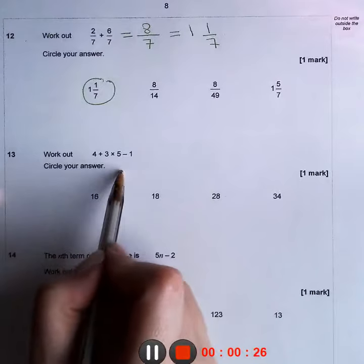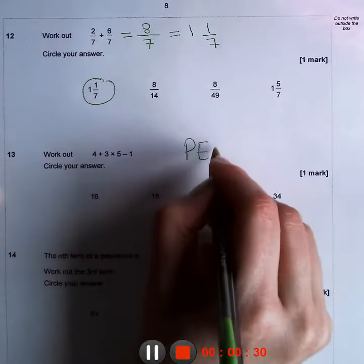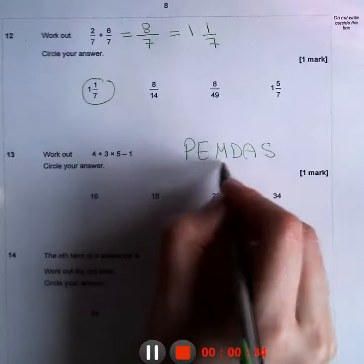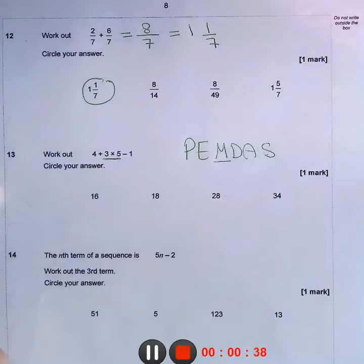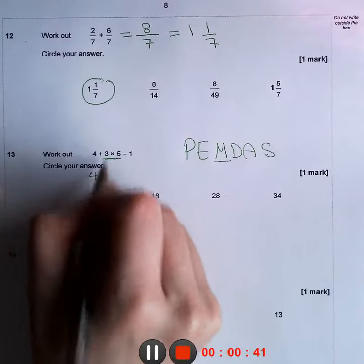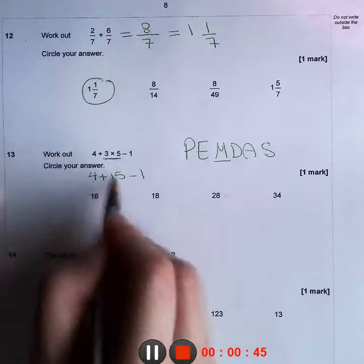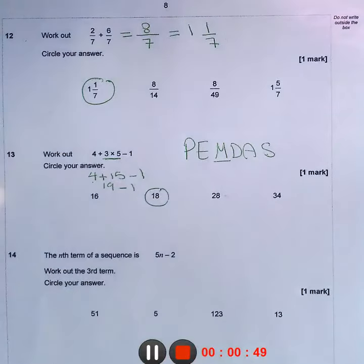We need to use PEMDAS, which means multiplication comes first. So this is 4 plus 3 times 5 is 15 minus 1. Then 4 plus 15 equals 19, minus 1 equals 18.